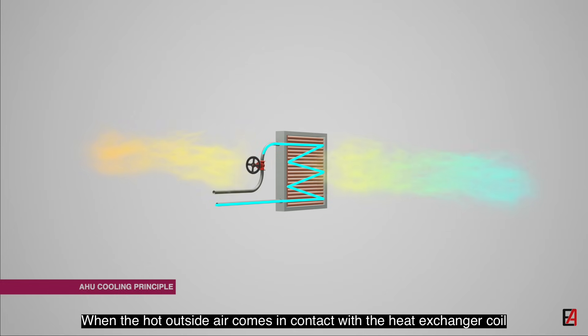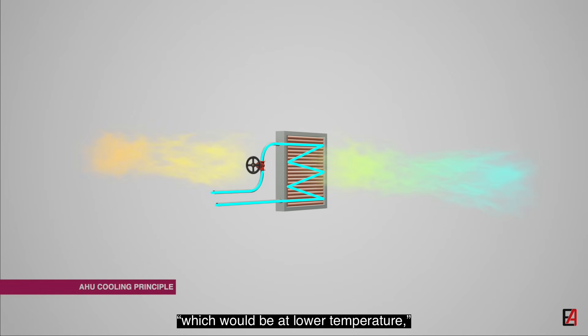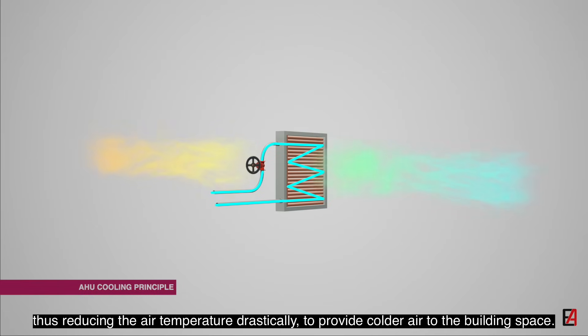When the hot outside air comes in contact with the heat exchanger coil, which would be a lower temperature, heat transfer takes place between the hot air and the cooling coil. The hot air molecules absorb moisture from the cooling coil, reducing the air temperature drastically to provide colder air to the building space.